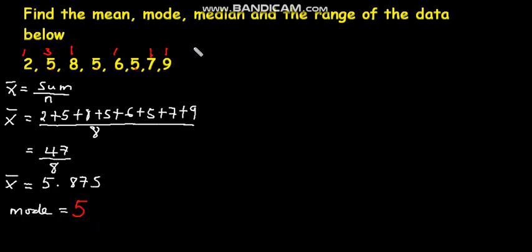Now the next thing is to calculate the median, the median or the middle number. Now in order to calculate the middle number, we have to first arrange the datum from the lowest to the highest. So we start with a 2, we go to a 5, we go to a 5, a 5.